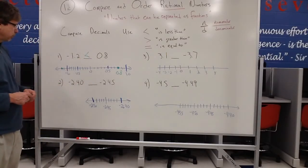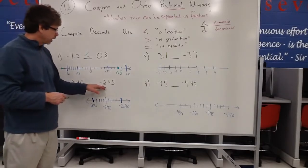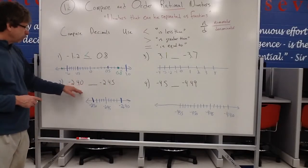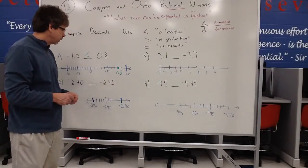So our next example, negative 2.40, and we're going to compare it to negative 2.45. That's negative 2 and 40 hundredths. I want to compare that to negative 2 and 45 hundredths.